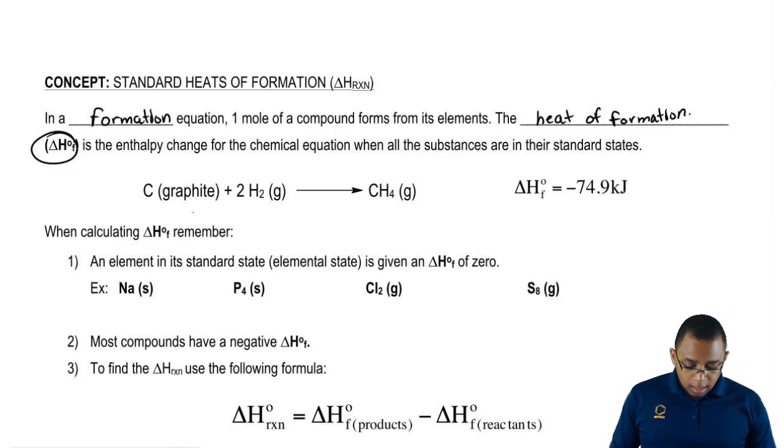Basically, a formation equation will be the one I provide here. The natural state of carbon in our environment is C graphite. The natural form of hydrogen in our environment is H2. Remember, hydrogen is a diatomic molecule.